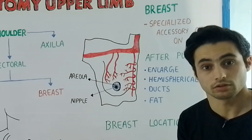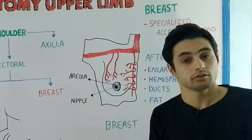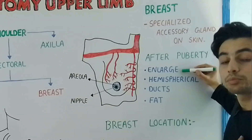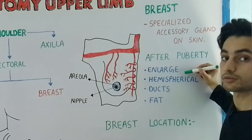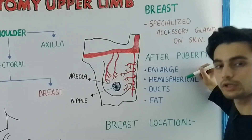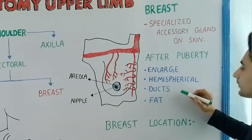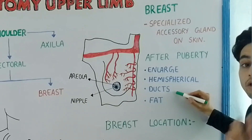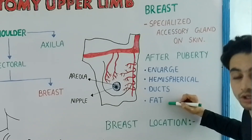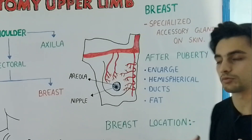The structure of the breast in immature females and males is very similar, but after puberty there are certain changes in the female breast. The breast enlarges by the action of ovarian hormones, assumes a hemispherical or dome shape, the ducts elongate, and finally there is fat deposition in the breast — that is why in young females the breast projects forward.